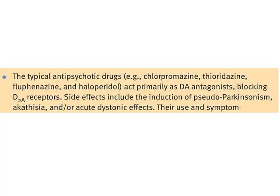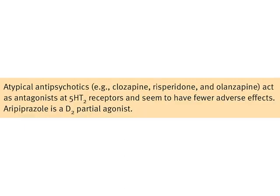To summarize: typical antipsychotic drugs like chlorpromazine, thioridazine, fluphenazine, and haloperidol act primarily as dopamine antagonists, blocking dopamine receptors; side effects include pseudo-parkinsonism, akathisia, and dystonic effects. Atypical antipsychotics like clozapine, risperidone, and olanzapine act as serotonin receptor antagonists and have fewer adverse effects. Aripiprazole is a D2 partial agonist, hence atypical antipsychotics are preferred nowadays.